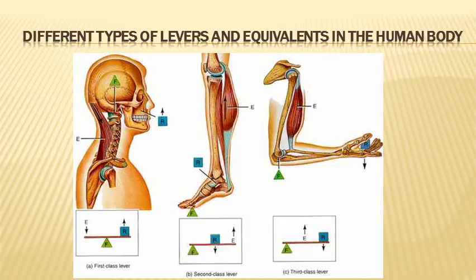Finally, when picking something up with your biceps, that's an example of a third class lever, which boosts the speed that the object moves at.